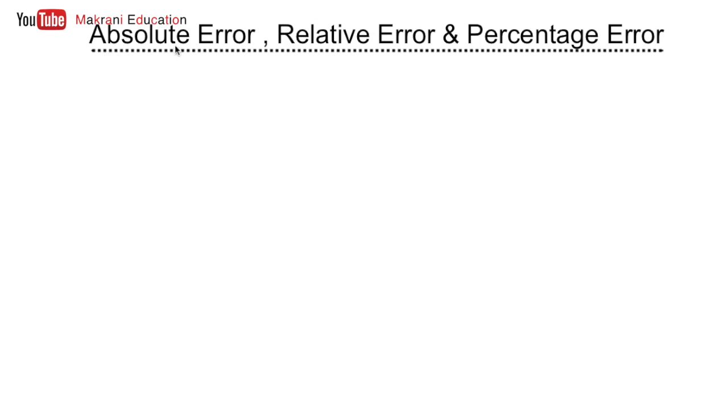Hello friends. In this session we are going to see what is absolute error, relative error, and percentage error. We need to find out these errors because we will be having a series of readings for any measurement. We will never rely on one reading — we will be taking a series of readings and taking the mean of those readings, and then doing some steps to find out the relative error, the percentage error, and the absolute error.